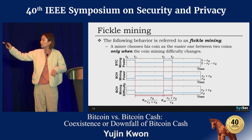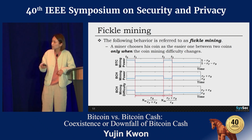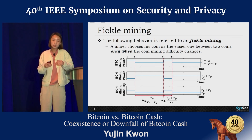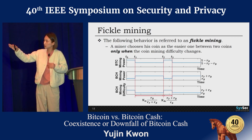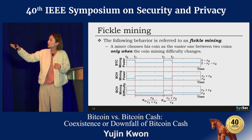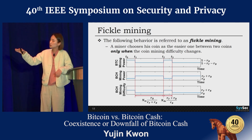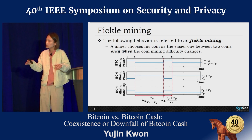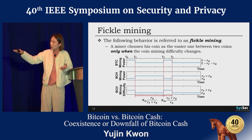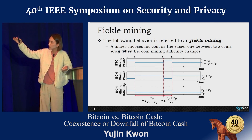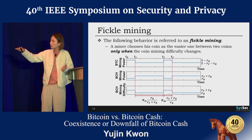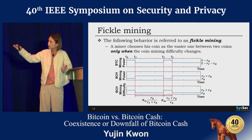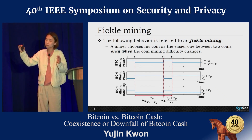In this figure, at T0, the BCH mining difficulty is high, so large mining power is involved in BTC mining. At T1, the BCH mining difficulty decreases, so large hash power moves from BTC to BCH. At T2, the BCH mining difficulty increases again, so large mining power moves back from BCH to BTC.